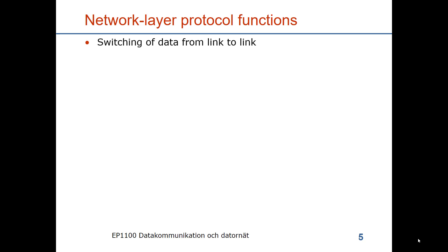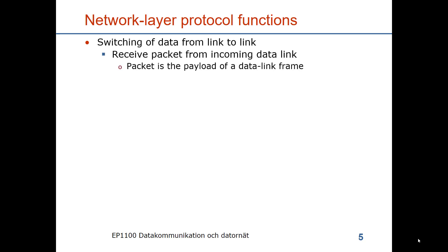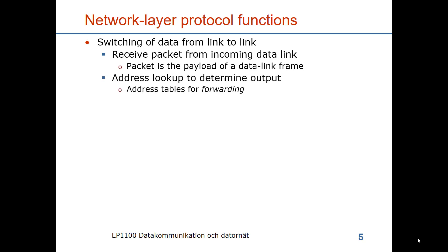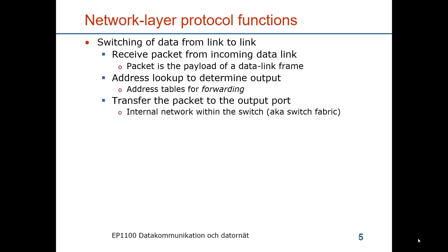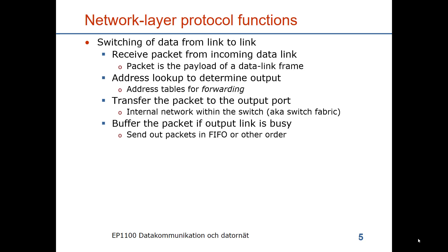The functions in the switch at the network protocol layer are, of course, to switch the data from input links to output links. It receives packets from the incoming data links, where the packet is the payload of the data link frame. It looks up the destination address to determine the output and uses the address tables of the switch for that. Then it transfers the packet from input port to output port through the internal network of the switch, sometimes referred to as switch fabric. The output link might not be available when the packet arrives there, so the packet might need to be buffered.